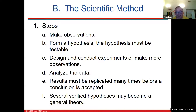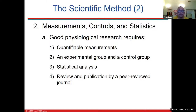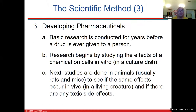Several verified hypotheses might become a general theory. Good physiological research requires quantifiable measurements, an experimental group and a control group — we'll discuss what those are. It also requires statistical analysis, review, and publication in a peer-reviewed scientific journal.